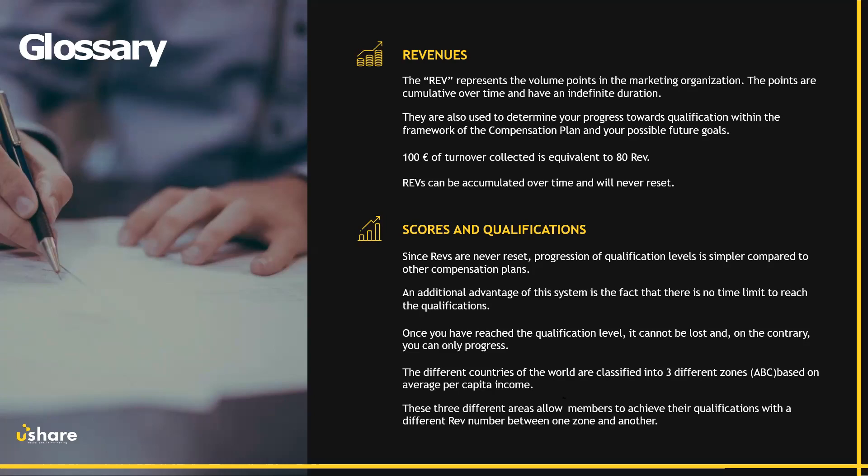Now let's talk about scores and qualifications. Since REVs never reset, progression and qualification are simpler to explain and can always go up. Compared to other compensation plans, an additional advantage of this system is that there's no time limit to reach your qualification. Some people need time to warm up, like a diesel engine, and then when they hit the ground they'll fly. Once you have reached a qualification level, you cannot lose it — you keep it for life and can only go up, which makes your progress easier.